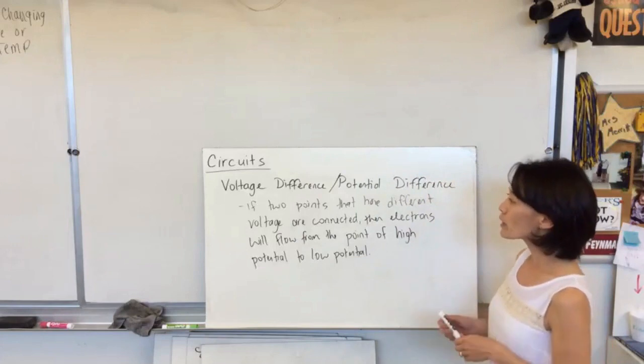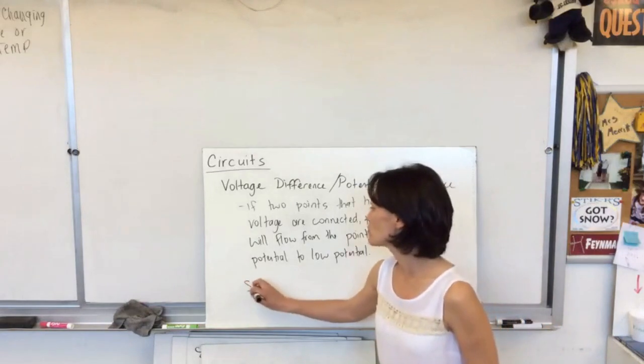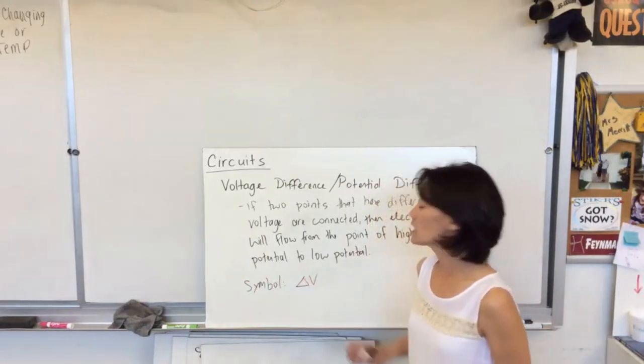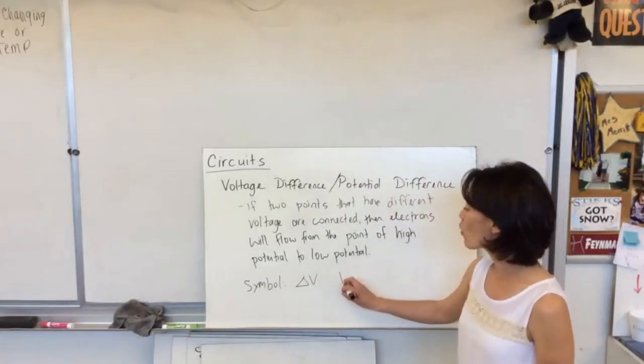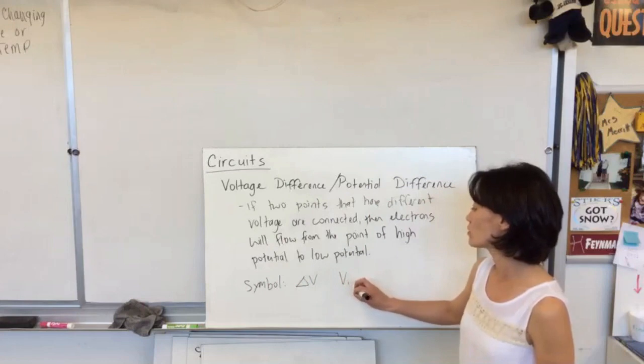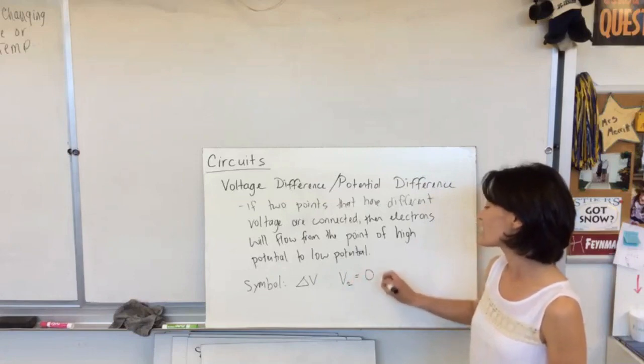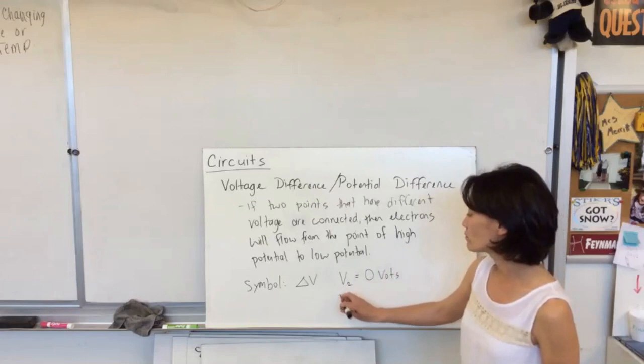So we are primarily going to be looking at the voltage difference. Technically, the symbol is a change in potential or a change in voltage, but because normally we'd say that one of our voltages, we'll call it V1, V2, because normally V2 is at zero volts, this then just becomes just voltage.